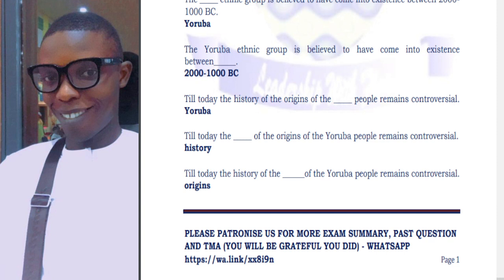The Yoruba ethnic group is believed to have come into existence between 2000 to 1000 BC — that is thousands of years back, before Christ. Note that particular period of years.